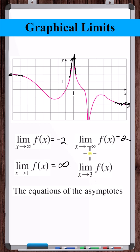The limit as x approaches 3 in general — let's check from the left. The limit as x approaches 3 from the left is negative infinity. As x approaches 3 from the right, also negative infinity.